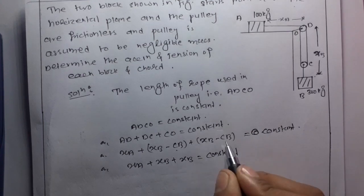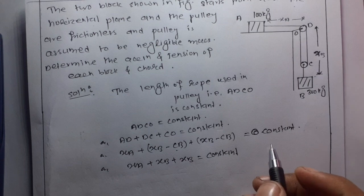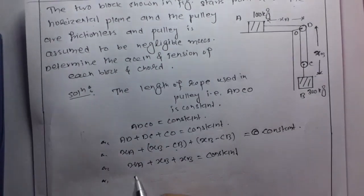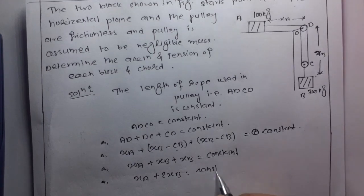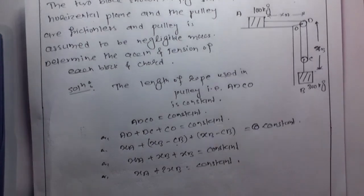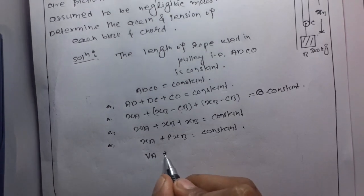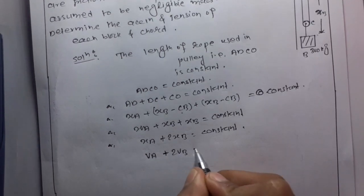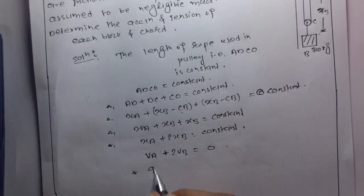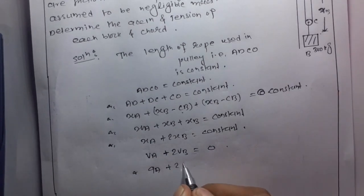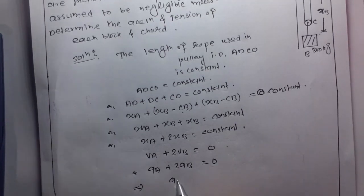Since CB is constant, differentiating with respect to time gives: velocity_A plus 2·velocity_B equals zero. Differentiating again gives: aA + 2·aB = 0.